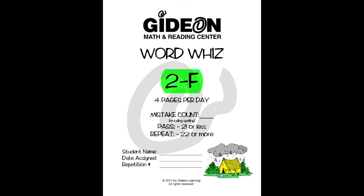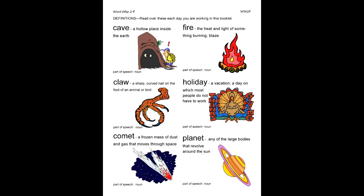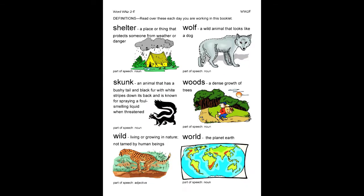In WordWiz Booklet 2F, the student must complete 4 pages per day and make 21 mistakes or less to pass. On the first two pages of this booklet, you will find a list of this booklet's definitions. It is important to read these every day you are working in this booklet. Let's read some together.